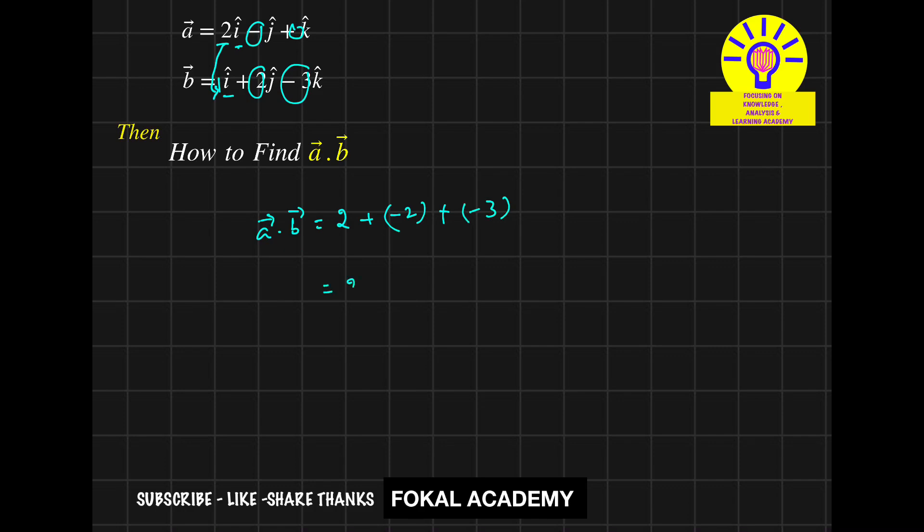So it becomes 2 minus 2 minus 3. So 2 minus 2 cancel, and it remains minus 3. So this is the dot product value.